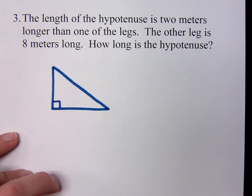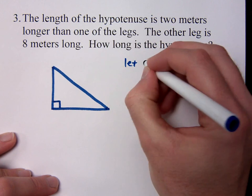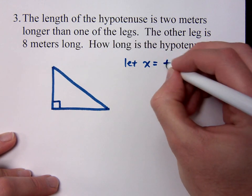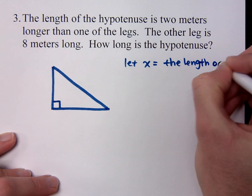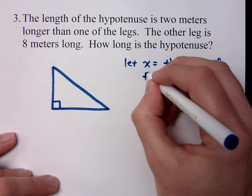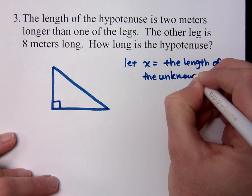The length of the hypotenuse is 2 meters longer than one of the legs. So I've got a problem with that. I don't know what one of the legs is, right? So I've got some guy that's unknown. If I let x equal the length of the unknown leg.